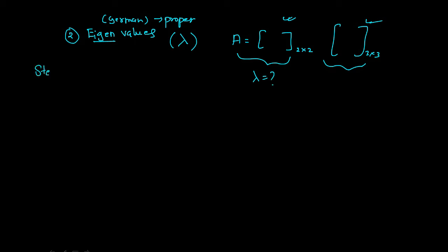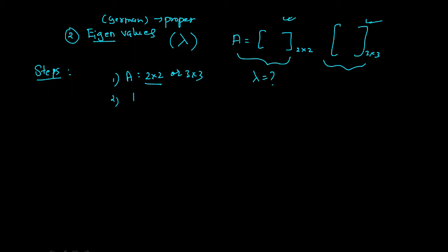So the steps: once you have the steps, everything is clear. First, look at the matrix — whether it is 2×2 or 3×3 — because for both of them the methods are different. In the basic video I will talk about 2×2; in further videos I will give real exam questions on 3×3. We are trying to find lambda, so: determinant of A minus lambda I equals 0. If you do that, you will get the value of lambda.